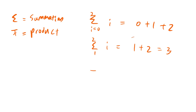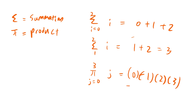Now let's look at product notation. If we have the product of j from 0 to 3 of j, the answer will be 0 multiplied by 1 multiplied by 2 multiplied by 3, which gives 0. For example, if we have pi of j from 1 to 3, the answer will be 1 multiplied by 2 multiplied by 3, which equals 6.